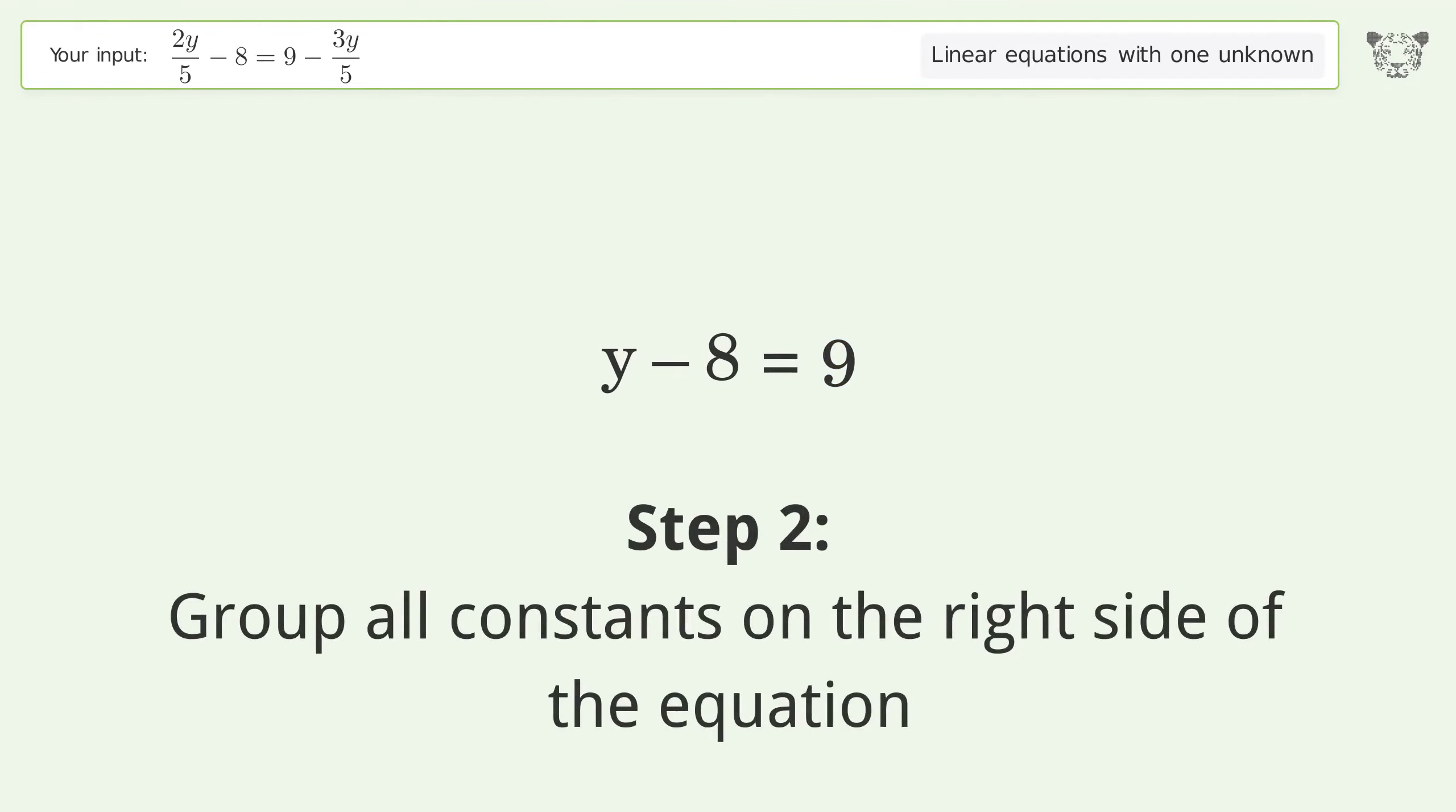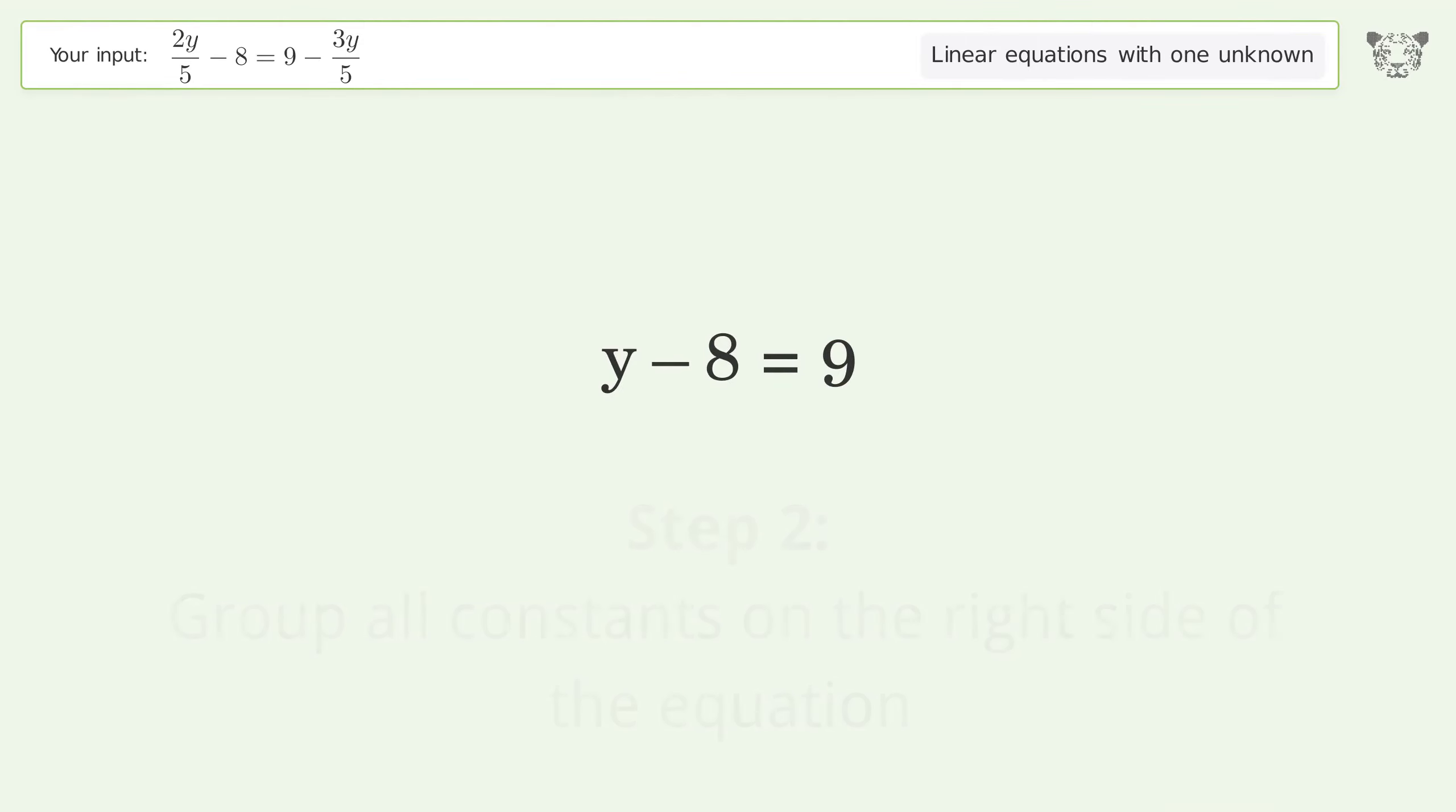Group all constants on the right side of the equation. Add 8 to both sides. Simplify the arithmetic.